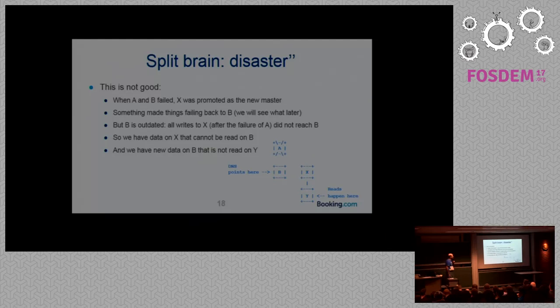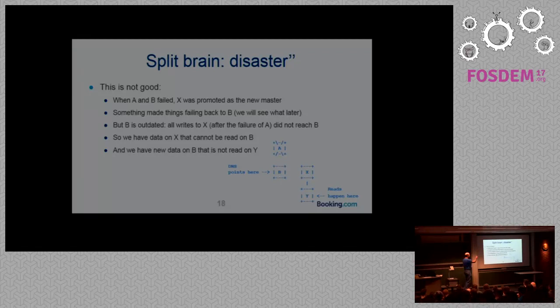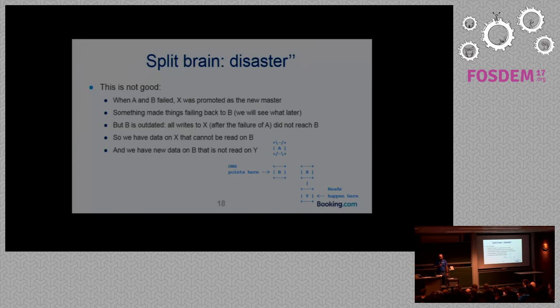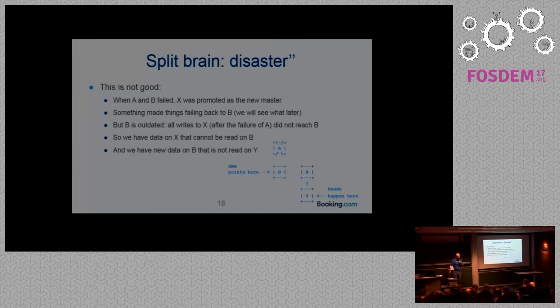That was Saturday morning. You wake up, you check what's happening, and you realize writes are happening on B. What happened? Reads are happening on Y. So we are not reading what we're writing. A very bad position to be in. So B has outdated data. All the writes that happened on X didn't reach B. So if we are reading from the master, we are not seeing that data. And all the new writes that happen on B do not reach Y.